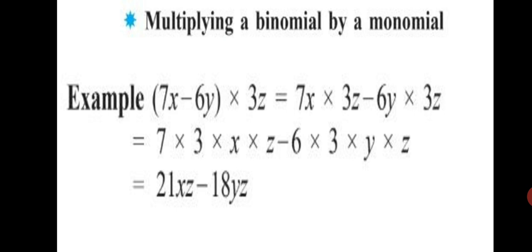In the second step, multiply the coefficients of the first term together, then multiply the variables. First term: 7 into 3 is 21, and x into z is xz, giving 21xz. Minus — plus into minus is always minus — so 6 into 3 is 18, and y into z is yz, giving minus 18yz. Final answer: 21xz minus 18yz.